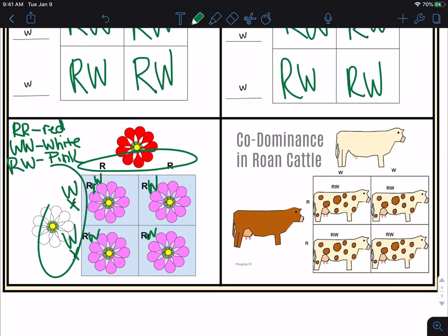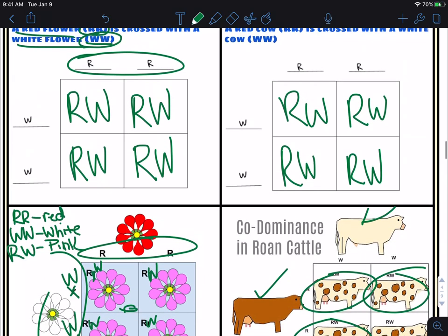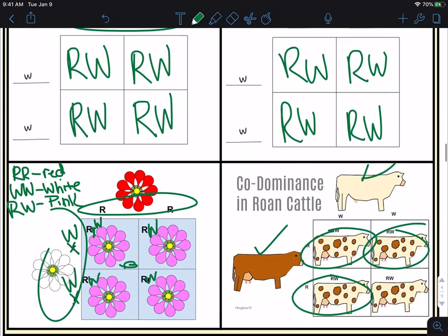It's just instead of seeing things like a blend between the two, like you would do over here with pink, now you're getting spots. You get a little bit of white and you get a little bit of red, and you end up with these roan cows, or these one and then the other.